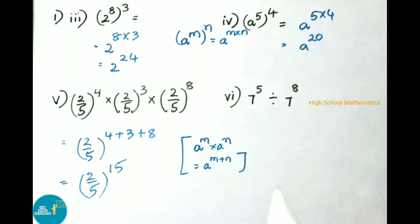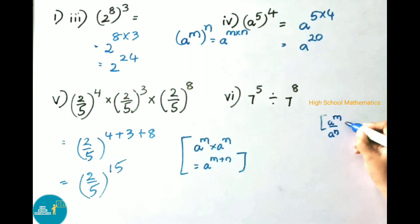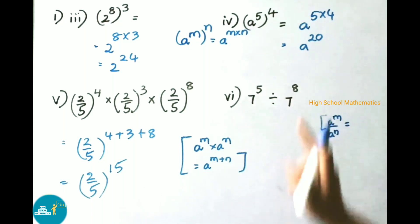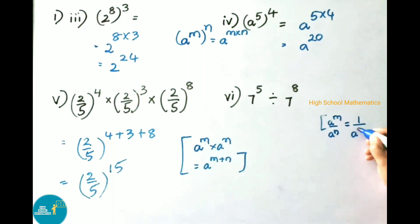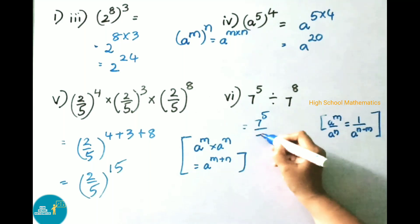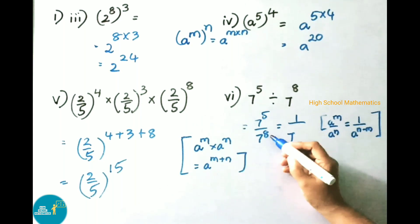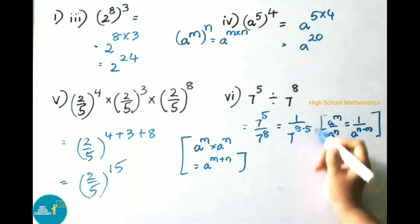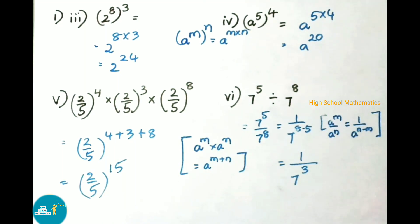Sixth one: 7 power 5 divided by 7 power 8. It is looking like the formula a power m by a power n. Here m value is 5 and n value is 8, and m is less than n, so the formula is 1 by a power n minus m. Applying this: 7 power 5 by 7 power 8 equals 1 by 7 power 8 minus 5, which is 1 by 7 power 3.